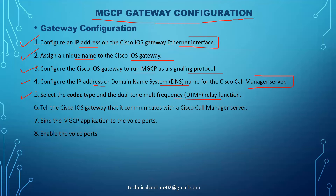You need to specify the codec type as well as the DTMF setting. Then the next step would be to tell your gateway that it can communicate with the call manager server — there will be a command to enter on the gateway for that. Then you need to bind the MGCP application to the voice ports and then enable the voice ports. Let's discuss all these steps, step one through step eight, in detail — how we can configure them on our gateway.